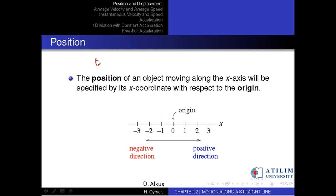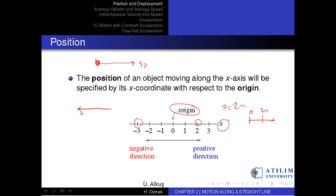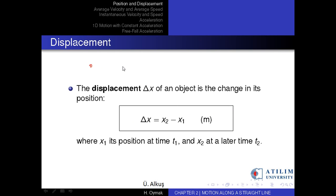Consider an object which undergoes a one-dimensional motion along the x-axis shown in this figure. The position of the object is given by its x-coordinate with respect to the origin. If the object is at x equals 2 meters, it is 2 meters in the positive direction from the origin. If it is at x equals minus 3 meters, it is 3 meters in the negative direction from the origin.